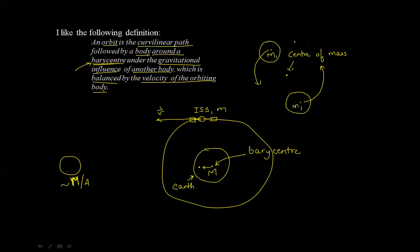And, as you can see from this system here, these two bodies are orbiting that center of mass. Similarly, in the Earth-Moon system, the Earth, as well as the moon, are orbiting around this center of mass, which is the barycenter.